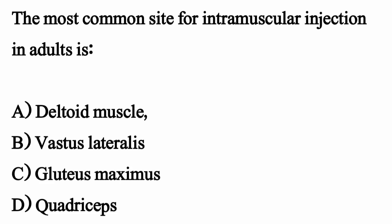The most common site for intramuscular injection in adults is — the correct option is Option A, deltoid muscle.